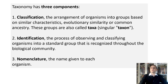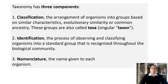Taxonomy consists of three components: classification, identification, and nomenclature. Classification is the arrangement of organisms into groups based on similar characteristics, evolutionary similarity, or common ancestry. These groups are also called taxa — singular: taxon. We just looked at the taxon called class. There are more taxa that break classes into orders, families, genera, and species.